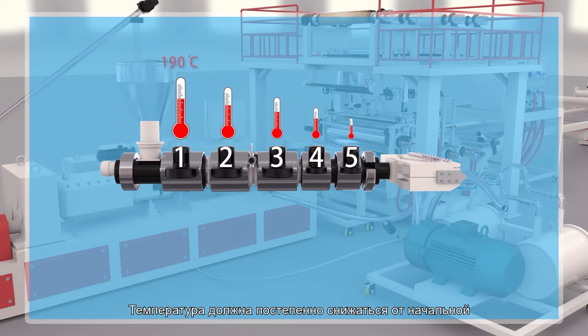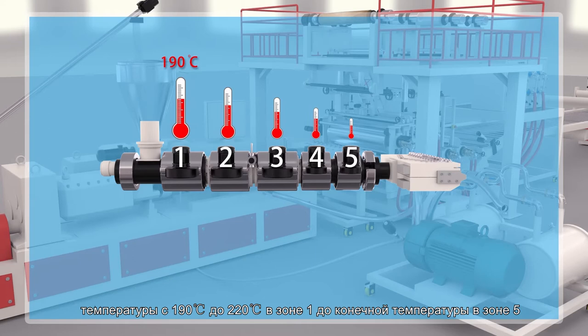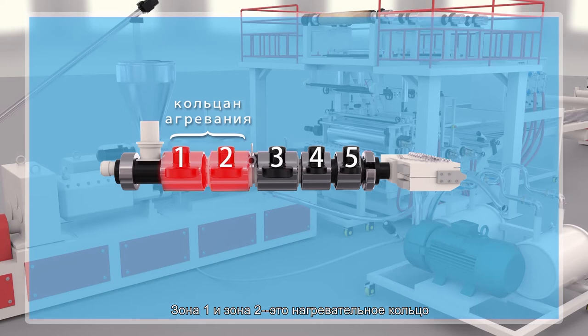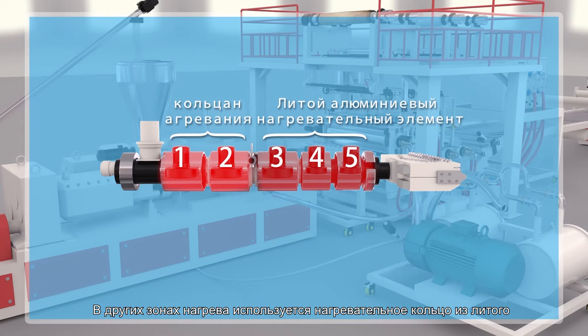For the temperature settings, it is gradually decreased from zone 1 with initial temperature of 190 degrees Celsius to 220 degrees Celsius to zone 5. For hardware, zone 1 and zone 2 adopt heating coils. In the other heating zones, casting aluminum heating coils are used.